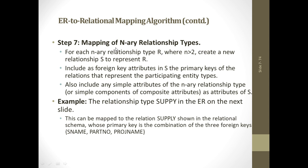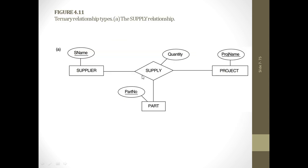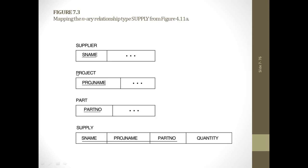Next is the mapping of an n-ary relationship. For example, a supply relationship involves supplier, part, and project, with s_name, part_number, and project_name as primary keys. Each entity gets its own table, and the supply table will include the primary keys of all three as foreign keys, plus any additional attributes.